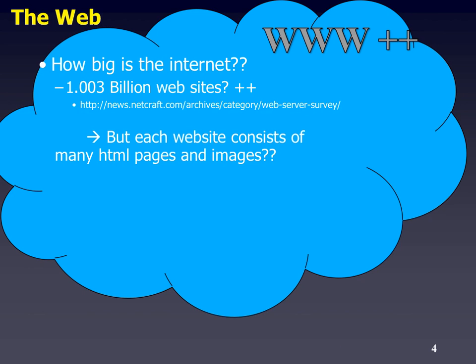Quick question: there's an estimate of at least a billion websites out there — a lot more that's not indexed and unknown, but about a billion have been surveyed. And each website consists of many many pages, images, CSS, JavaScript, movies, you name it. So where's it all stored?